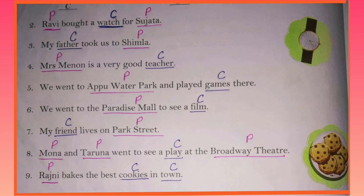And which are the common nouns? Watch, father, teacher, games, film, friend, play, cookies, town. These are the general names for a person, places and things.